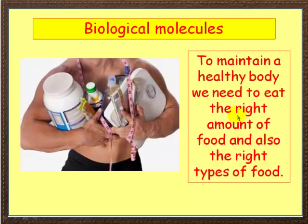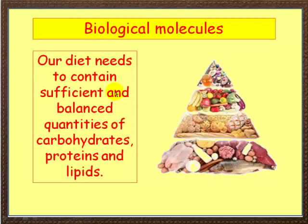In order to maintain a healthy body we need to eat the right amount of food and also the right types of food. Our diet - and here we're not talking about just a weight loss diet, you can have weight gain diets, weight maintenance diets, whatever the diet is - it needs to contain sufficient and balanced quantities of carbohydrates, proteins and lipids. Let's look now at each of these types in turn.